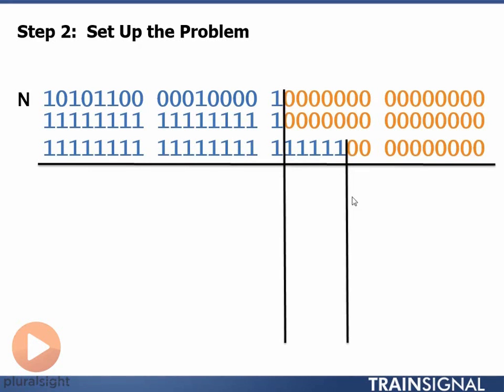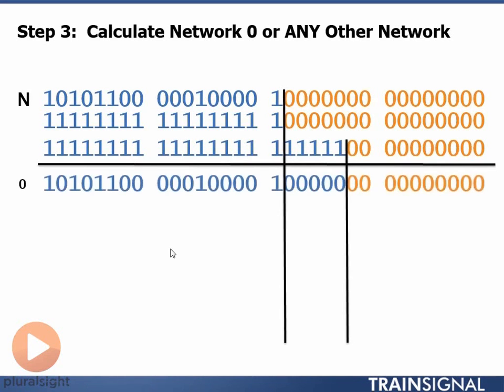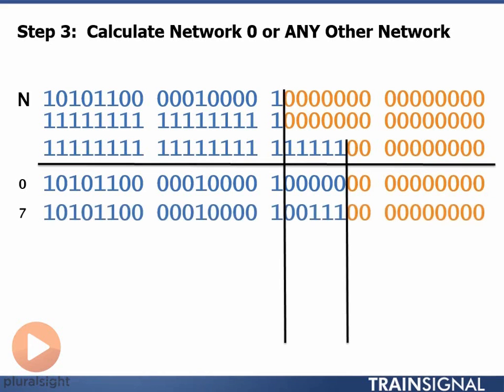Now we can calculate network zero or any other networks. For network zero, convert zero to binary, put it into our borrowed bit section, put all zeros in the host portion, and we get our network address. Calculate network number seven: convert seven to binary, put it into our borrowed bits section. Here 00001111 is the number seven, all zeros in the host portion.